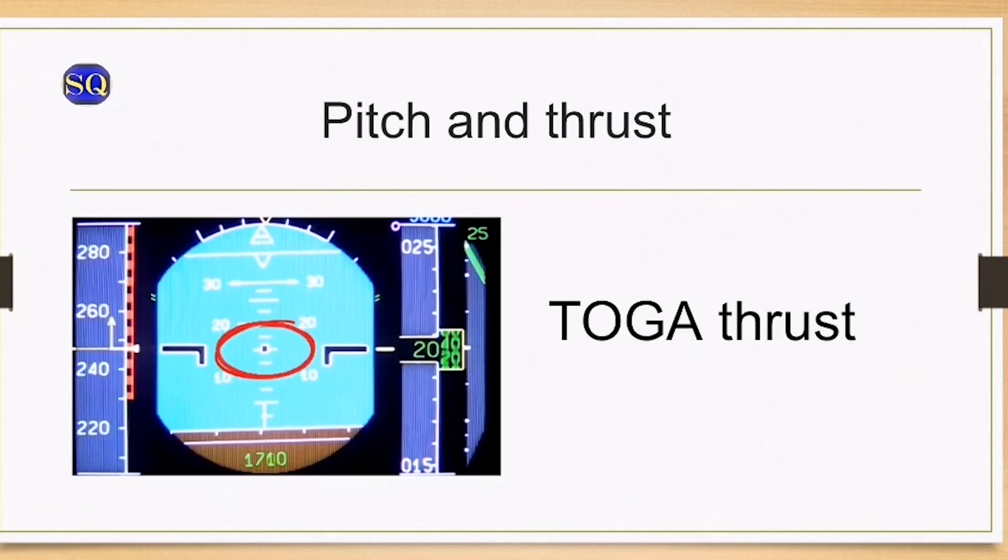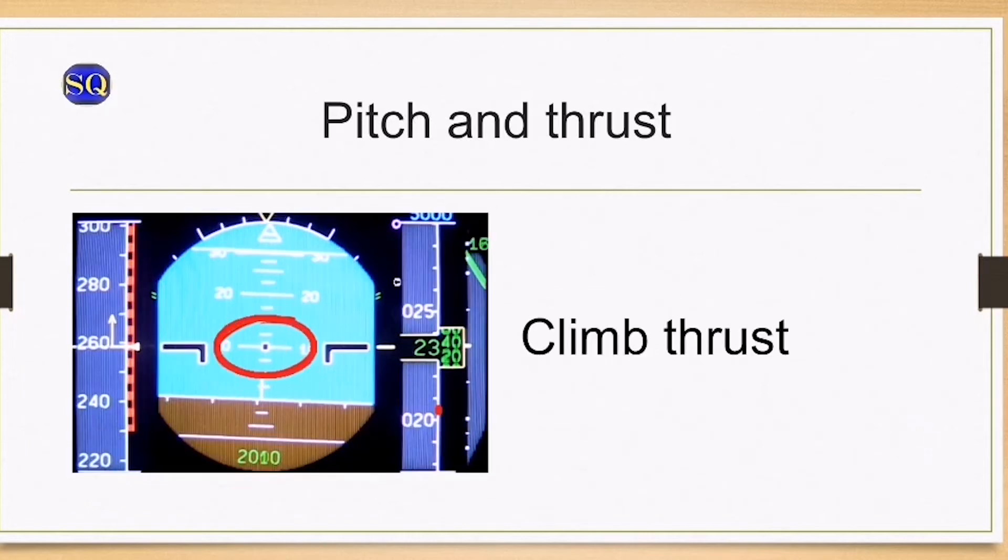Below thrust reduction altitude, pitch to 15 degrees and set to TOGA. Above thrust reduction altitude and below flight level 100, pitch to 10 degrees and set to climb thrust.